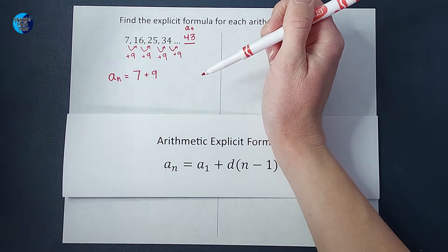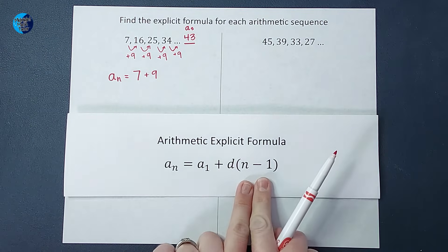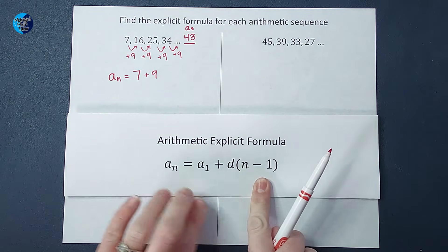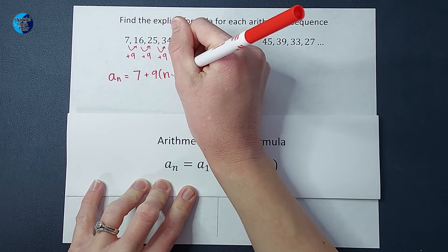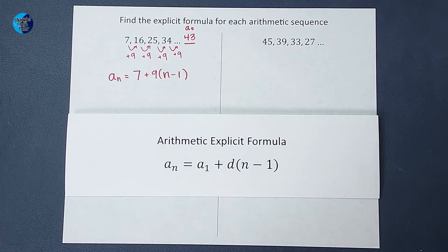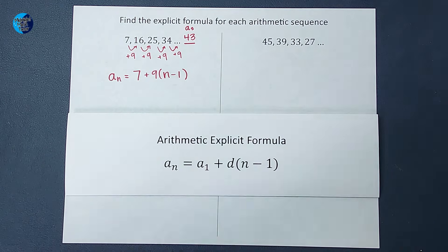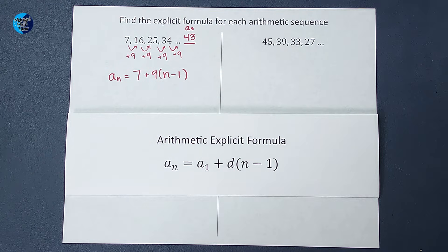We added it one less time than the number we needed. So that is where this n minus one comes into place. So we have n minus one. One less than however, whatever place you want to find, right?